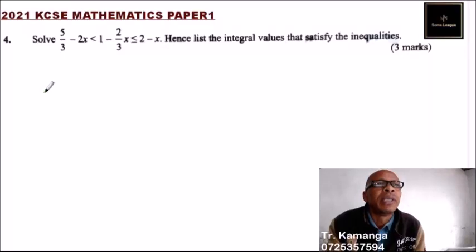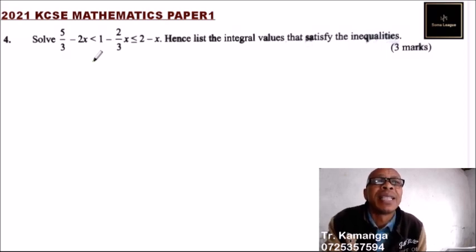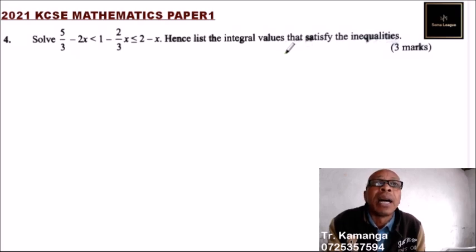Question number 4. We have: 5 over 3 minus 2x less than 1 minus 2 over 3x, less than or equals to 2 minus x. Hence, list the integral values that satisfy the inequality.